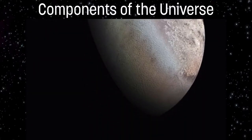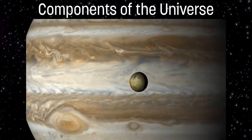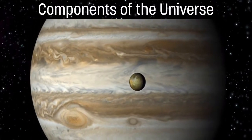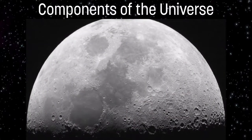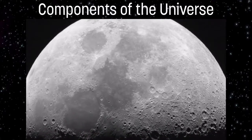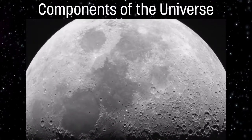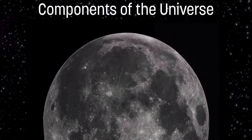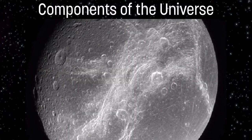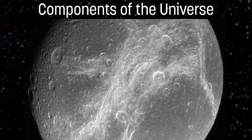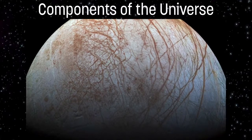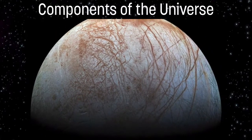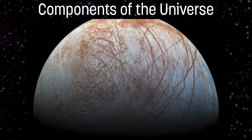Some of the moons, like the moons of Saturn — specifically Titan — could potentially have ice and could potentially have water somewhere trapped beneath its surface. So our moons in our own solar system hold a lot of clues to our own universe.